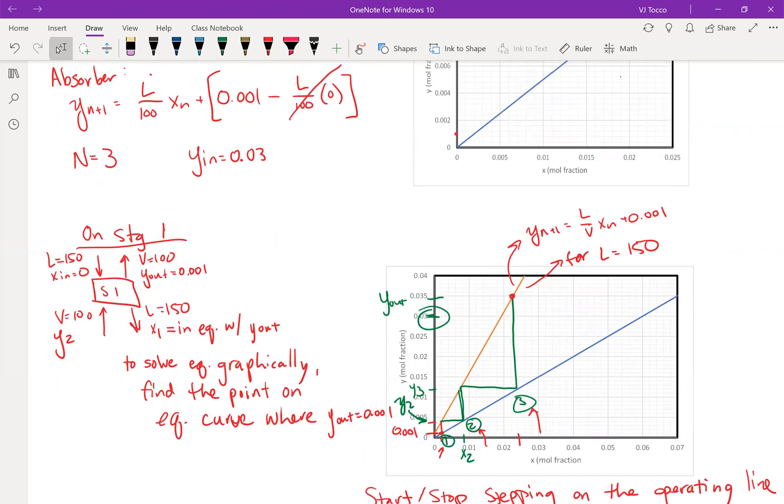One more note before I leave though, for an absorber, you would expect that the operating line, the orange line in this case is going to be above the equilibrium data, the blue line. If this were a stripper, I would expect that my operating line is below the equilibrium data. You should think about why that is as part of your reflection on this video. So I'll see you in the next video, which is about how to define what the limits of operation are for an absorption of stripping column.